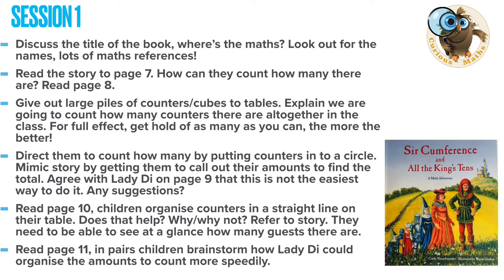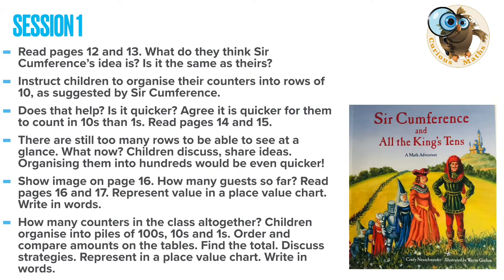Session one. Start off by discussing the title of the book and the maths in it — do look out for the characters' names throughout the book, they're really funny. In this session we're going to look at how to count and mimic what's happening in the story. Give out large piles of counters and cubes to the tables, explain you're going to find out how many you've got in the class, and direct them to count by putting counters in a circle, just like in the book. Then mimic the story by getting them to call out their amounts and agree that this isn't the easiest way. Continue by organising the counters in a straight line and brainstorming how to count more easily, then go on to Circumference's idea of organising into rows of ten.